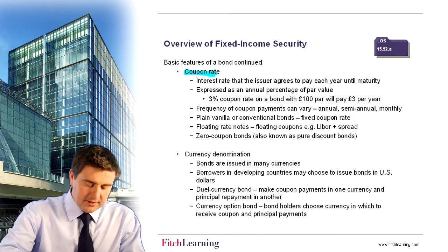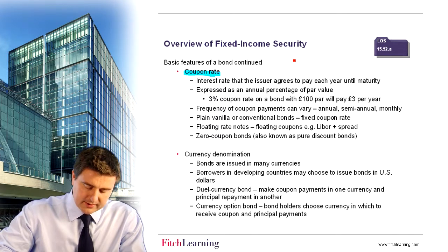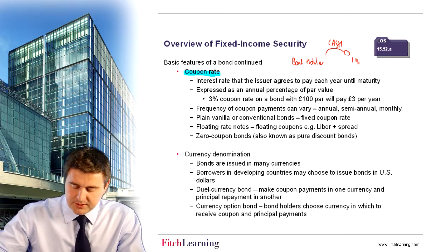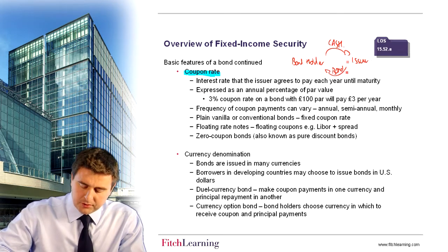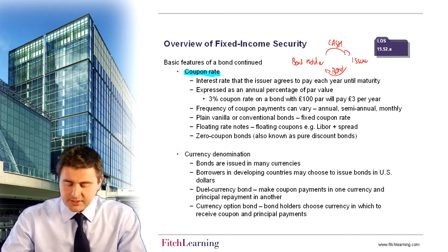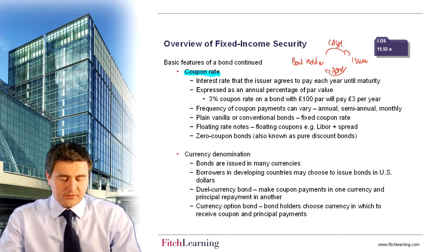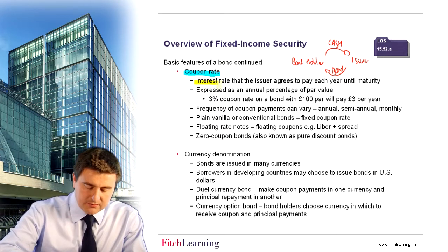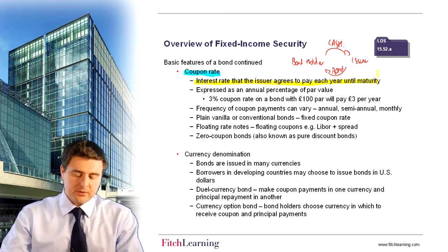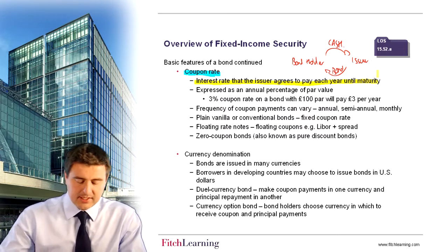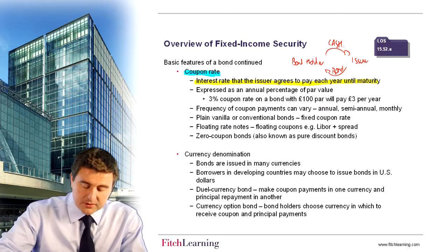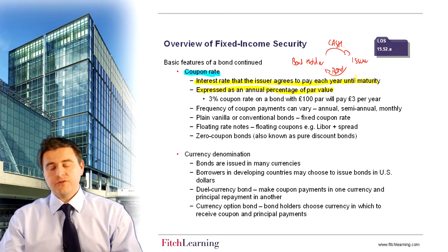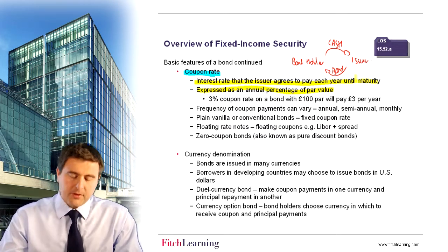The next concept is the idea of a coupon. As the investor — the bondholder — you would pay a cash amount to the issuer, and in return they provide you with a bond. That gives you the nominal value back on maturity, but also over the life of the bond you will receive a coupon rate. The coupon rate represents an interest rate that the issuer agrees to pay each year until the maturity of the bond, expressed as an annual percentage of par value. For example, a 3% coupon on a bond with £100 par value would pay 3% of 100, which is £3 for the year.